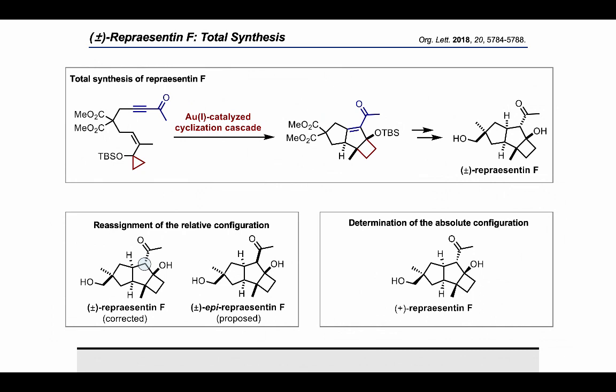To sum up, the first total synthesis of representin F was accomplished in 16 steps featuring a gold(I) catalyzed cyclization cascade as the key step. The synthesis of the natural product allowed the reassignment of its relative configuration and the determination of its absolute configuration.